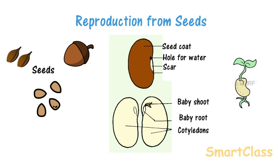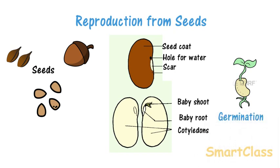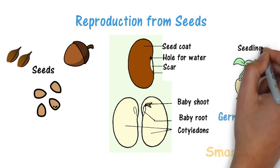When seeds get enough water, air and warmth, they grow into new plants. The process of growth of a baby plant from seeds is called germination. The baby plant is known as seedling.